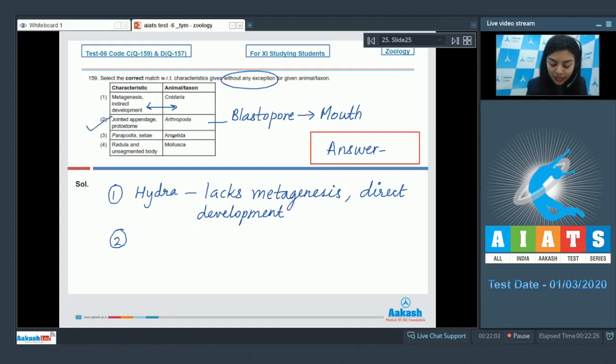Parapodia and setae in Annelida. This is true in the case of Nereis, where Nereis possesses parapodia and setae both. But leech, which is also an annelid, it lacks both parapodia as well as setae. So this is an exception. This was 3. Option 4: Radula and unsegmented body for mollusks. Yes, mollusks possess radula which helps in feeding and their body is unsegmented. But there is a mollusk called Unio which lacks radula. So this is also not without any exception. The right answer is option number 2.